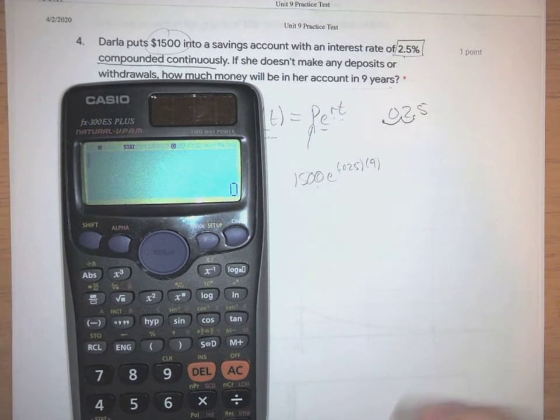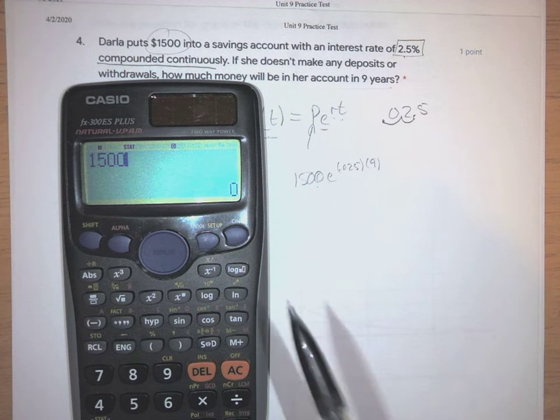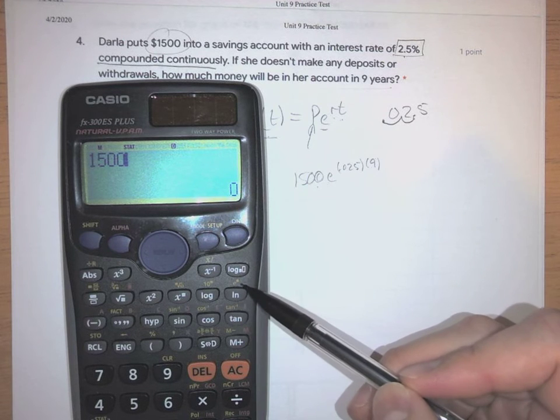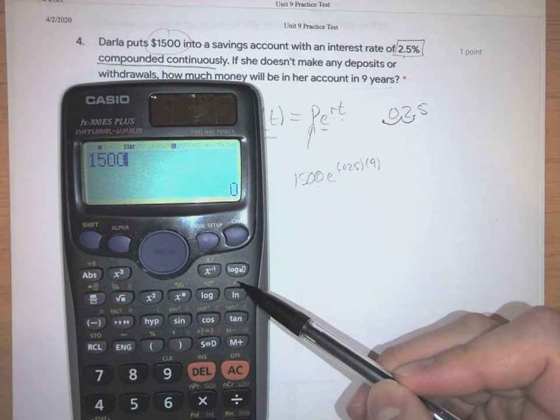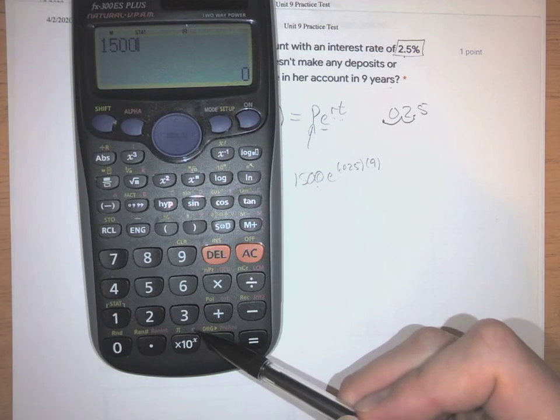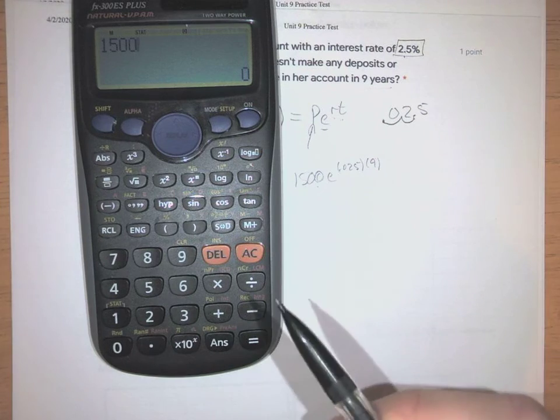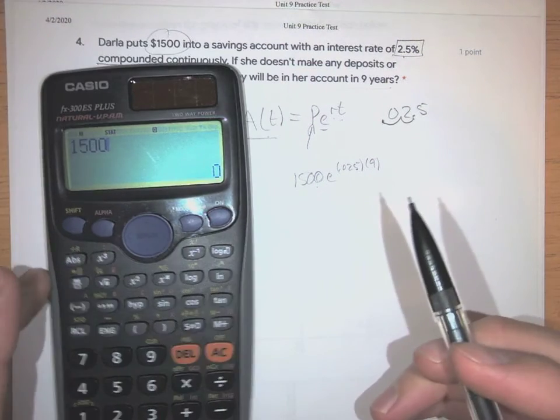So all in one shot. 1,500, and then we need to find e. So on this calculator, the e is right here. That's e to the power. You also have an e down here. Get familiar with your calculator. Find out where that e is before you take your test.